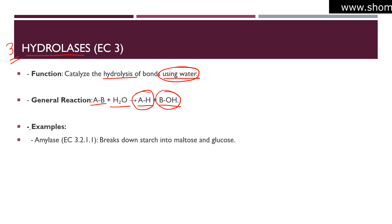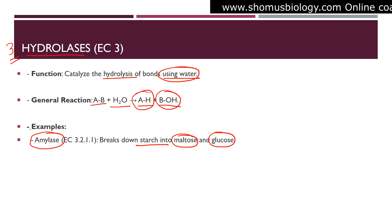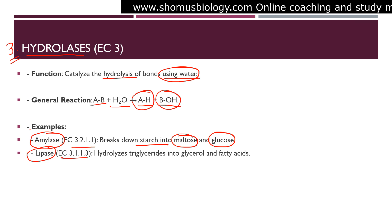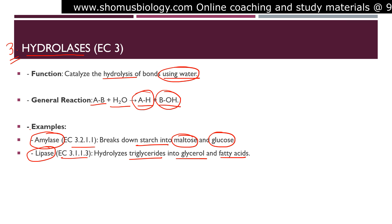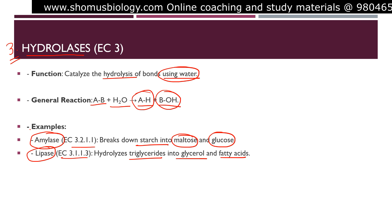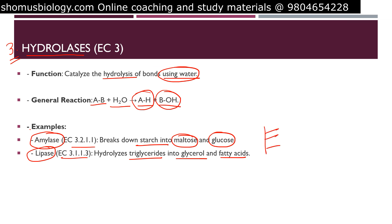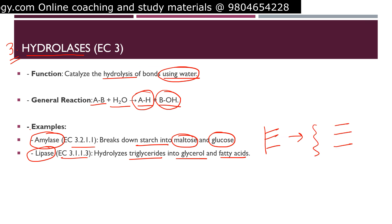Examples of hydrolases include amylase, an enzyme that breaks down starch into maltose and glucose — breaking complex carbohydrates into simpler sugars. Next is lipase, which hydrolyzes triglycerides into glycerol and fatty acids. The glycerol backbone is separated from the three fatty acid chains. That is the job of lipase.